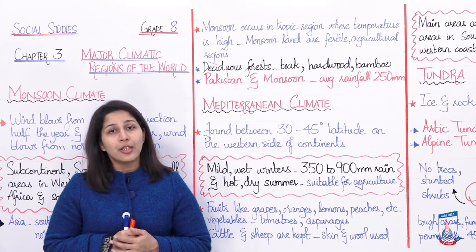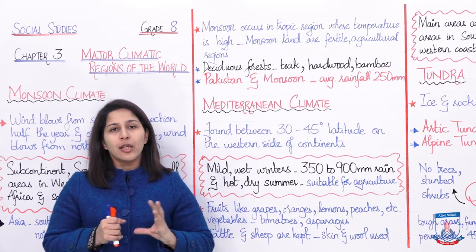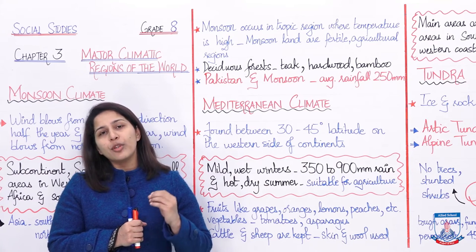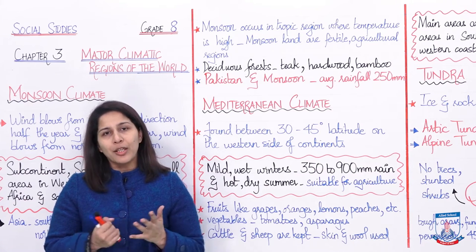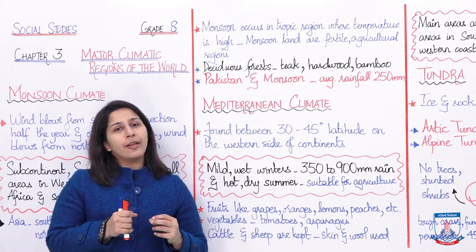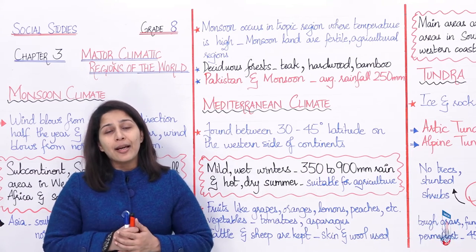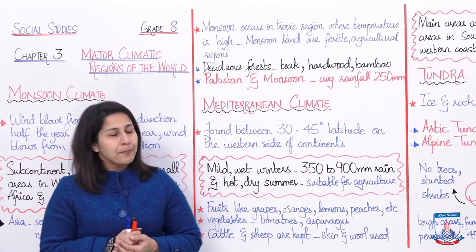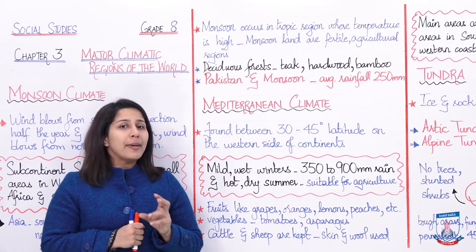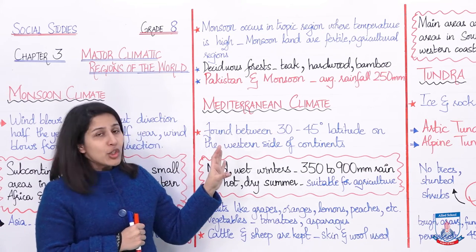Jab temperature hot ho toh water vapor in the wind condenses. Joh water vapor wind ke andar trap hota hai, woh paani mein badal jaata hai aur phir rainfall ke torpe barasta hai. Since it causes a lot of rainfall, the soil becomes very fertile — bhoat zarakhiz. It is very suitable for growing crops. Majorly jin regions mein monsoon climate hota hai, wahan deciduous forests paye jaate hain.